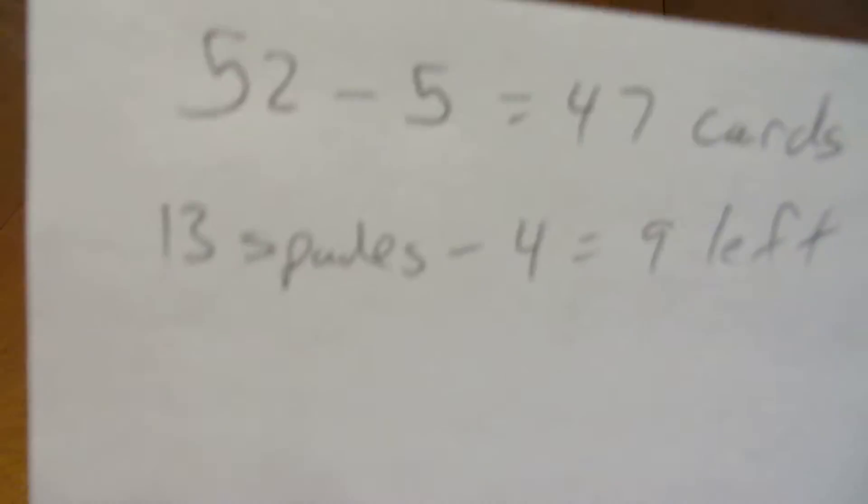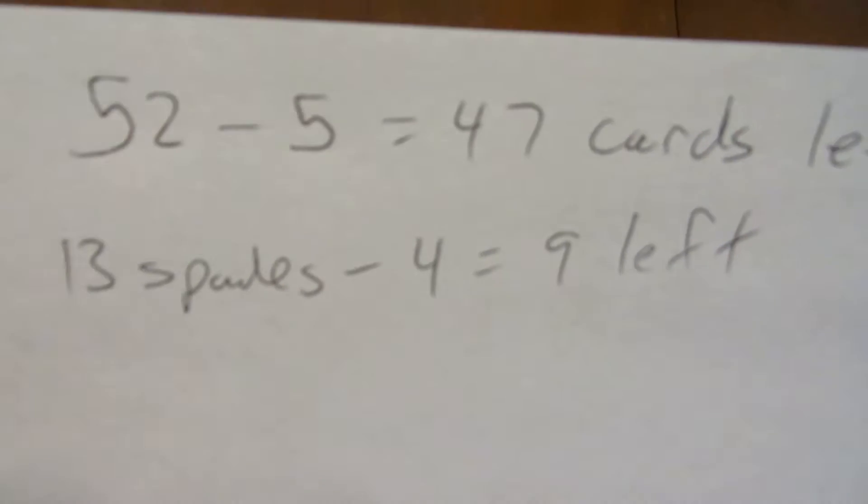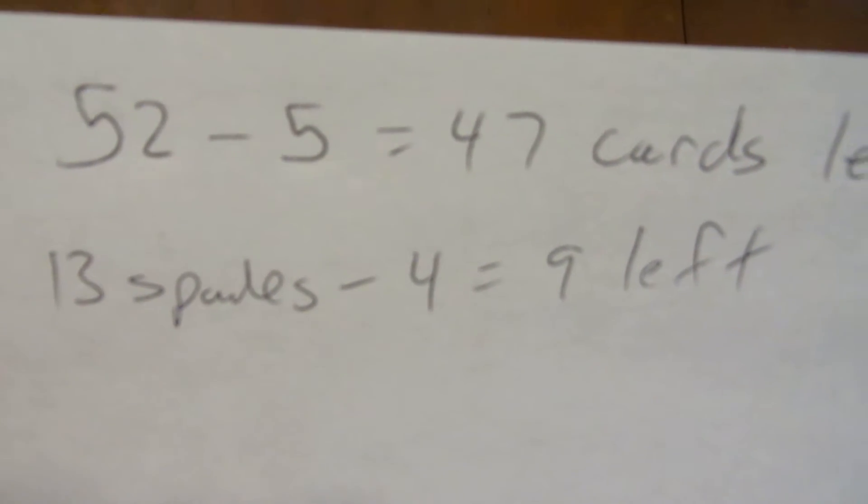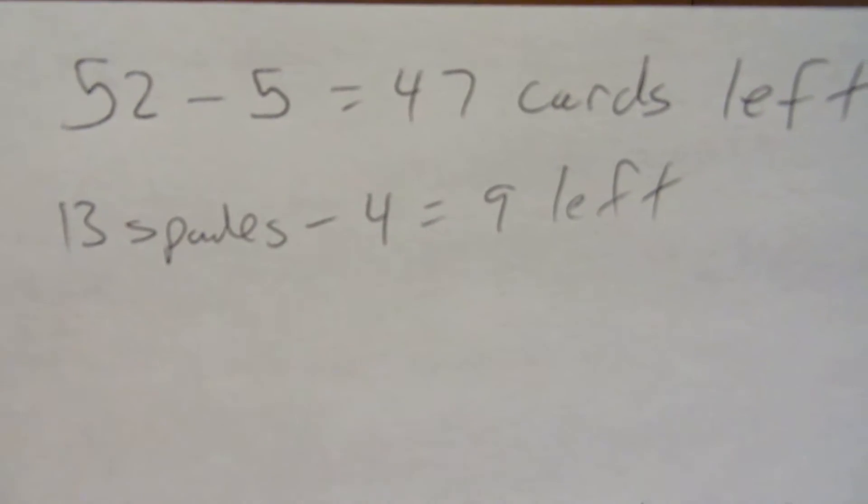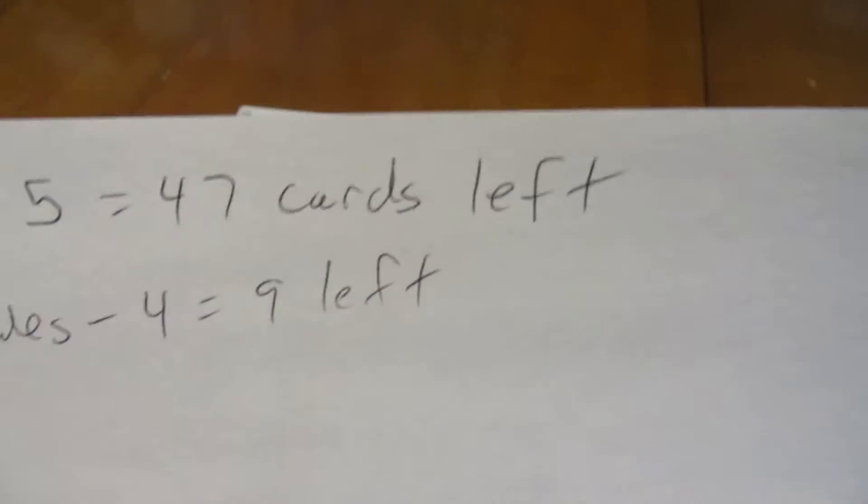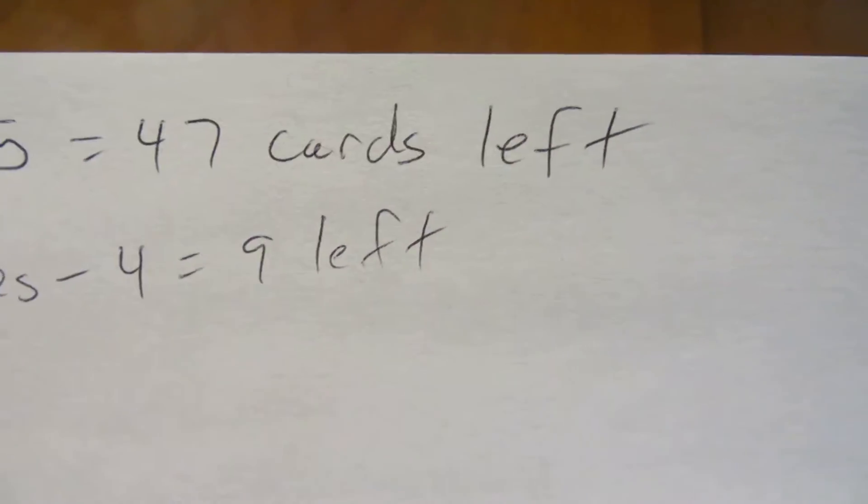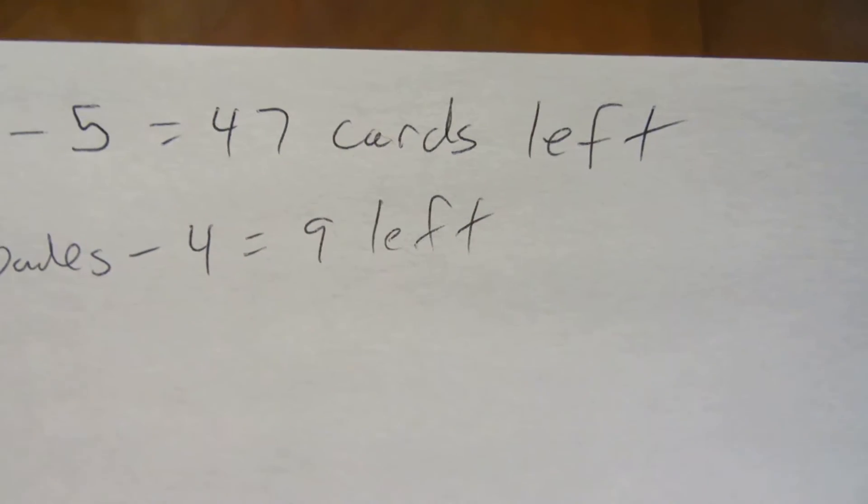So right now we see 5 cards. 52 minus 5 is 47 cards left. 13 of those were Spades. 4 of them we see now, so 9 Spades left. So 9 of the last 47 cards were Spades. And we can figure out our probabilities from that.